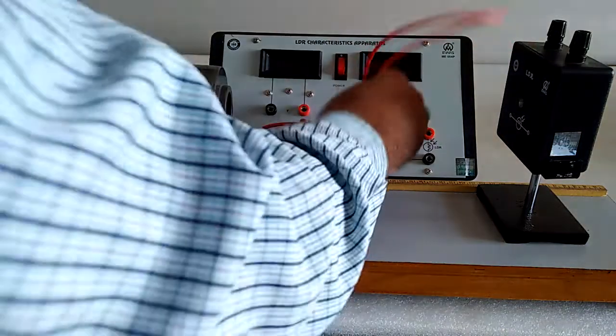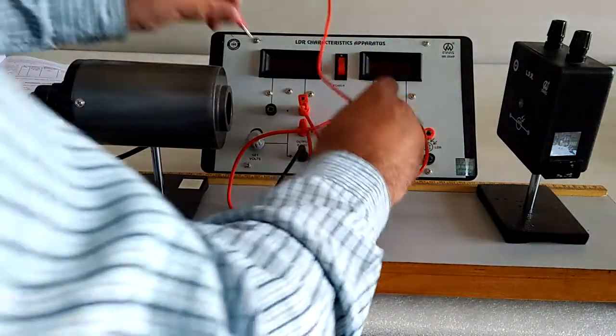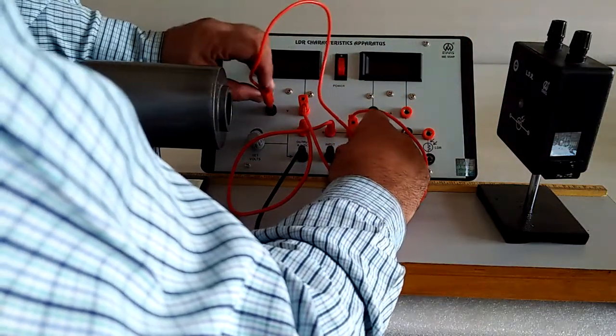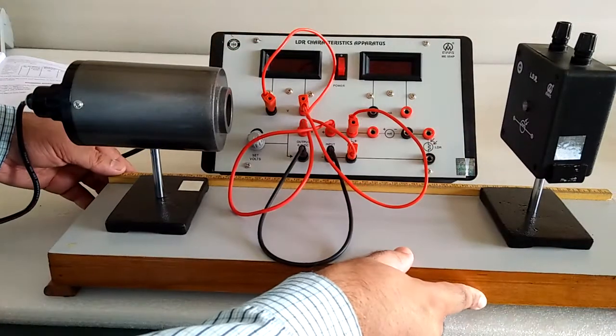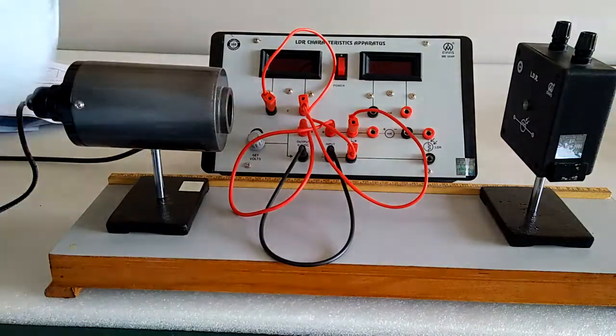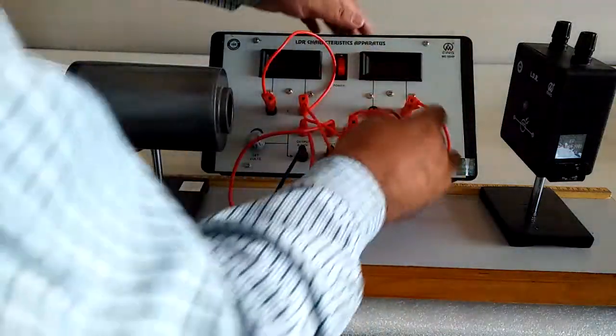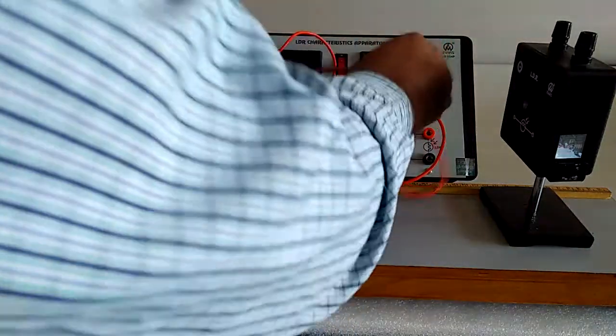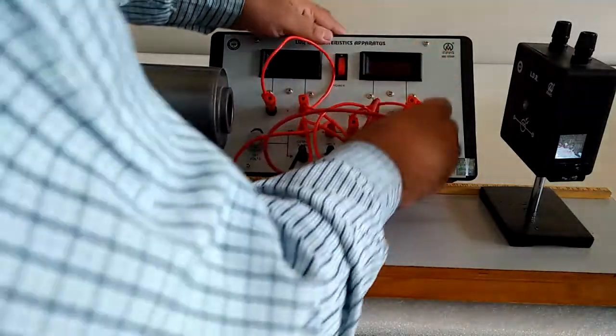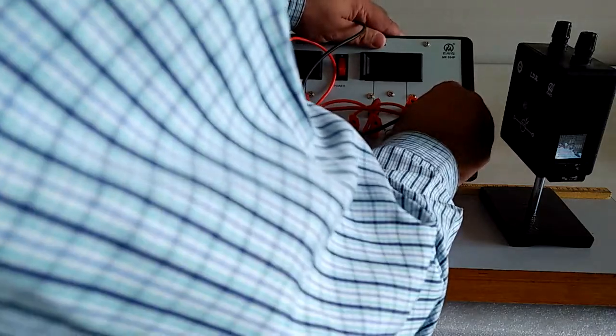Connect the voltmeter in parallel, the current meter in series, and the LDR is connected as per the platform over there.